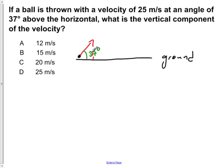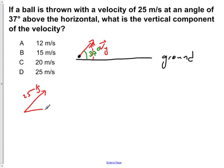The vertical component, shown here as Vy, is what we're going to try and solve for. So if we redraw this triangle, we have a velocity of 25 meters per second and an angle of 37 degrees, and we have a vertical component, Vy, which we're trying to solve for.